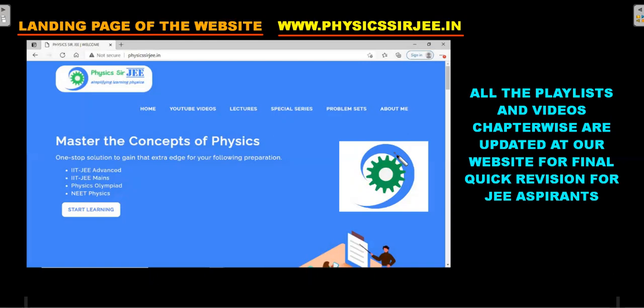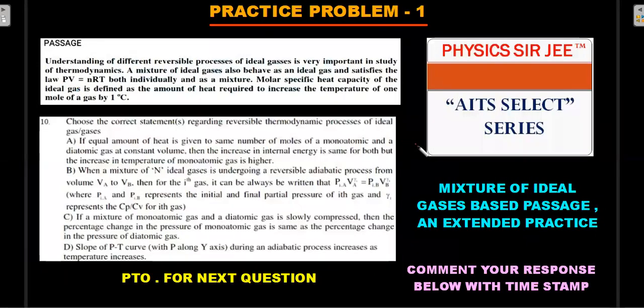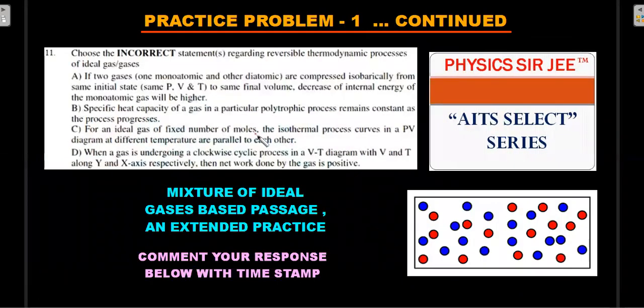Here's the practice problem one. This is a passage as you could see about the mixture of ideal gases followed by two questions. I have put one question here - question number 10. Let's move to the next question. This is the second question as a part of the mixture of gases. It's a nice extended practice for students. I'll answer this question in the AITS Select series and you can comment your response below with the timestamp. Timestamp for any doubt or any response is important because as the video grows older I would not be able to remember what you are referring to.